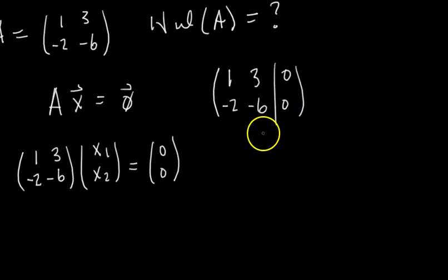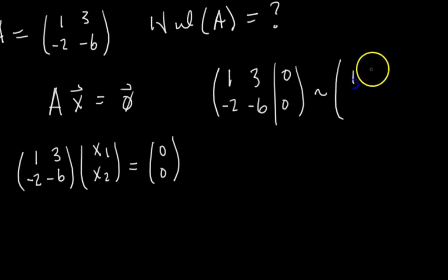and now we solve this by row reducing. So we go 1, 3, 0, we do row 2 plus 2 times row 1, so we get 0, 0, 0.